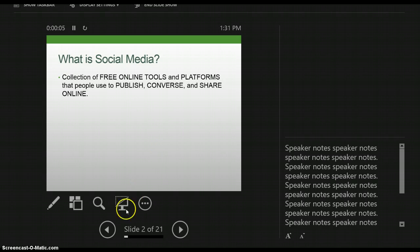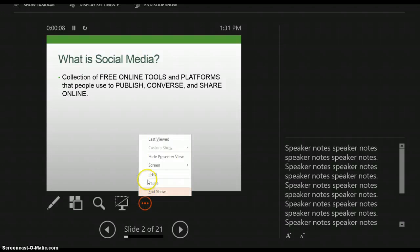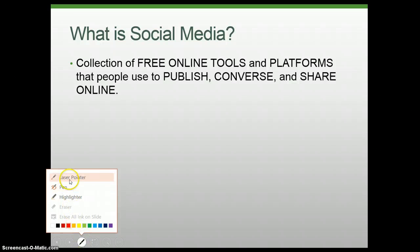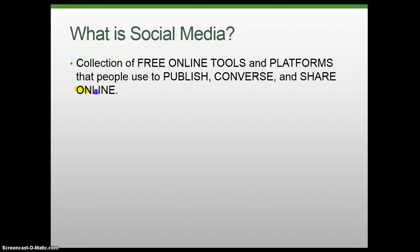I'll go back to the options button and go to hide presenter view, so I'm back to this view again. I'll show you a couple of these buttons. I've got the pen button here — before I went to pen, but this time I'll try the highlighter and highlight some text. And again, you can press E on your keyboard to erase those markers.